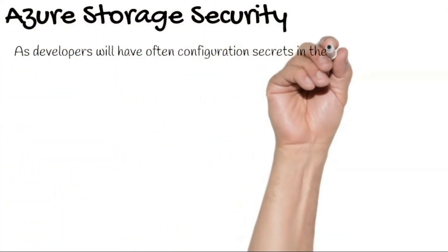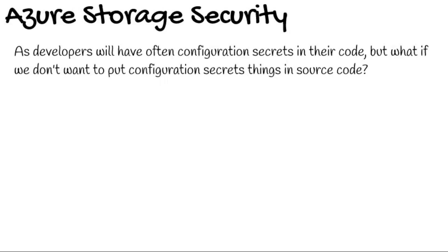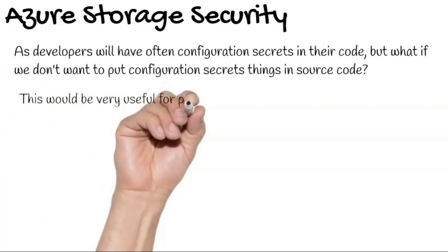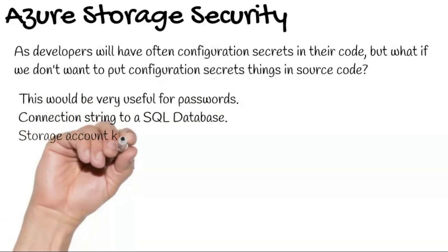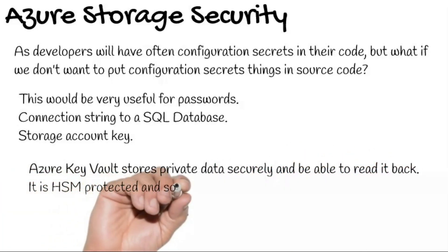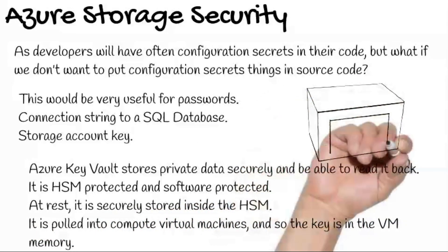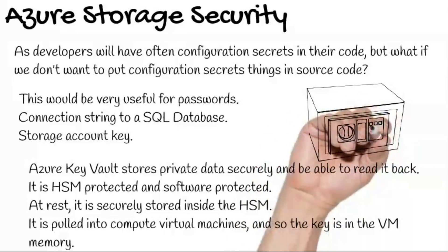As developers, we often have configuration secrets in our code. But what if we don't want to put configuration secrets in source code? In this case, Azure Key Vault comes into play. Azure Key Vault provides several different types of storage, very useful for passwords, connection strings to a SQL database, and storage account keys. Azure Key Vault stores private data securely and allows it to be read back. It is both HSM-protected and software-protected. At rest, it is securely stored inside the HSM, and the key is pulled into compute virtual machines, so the key resides in VM memory.